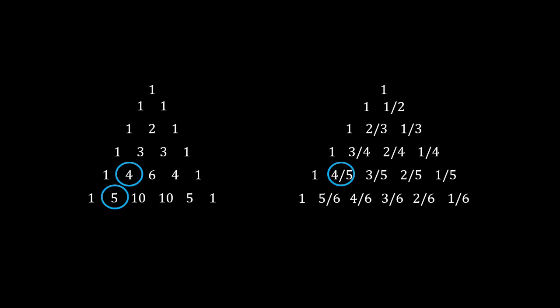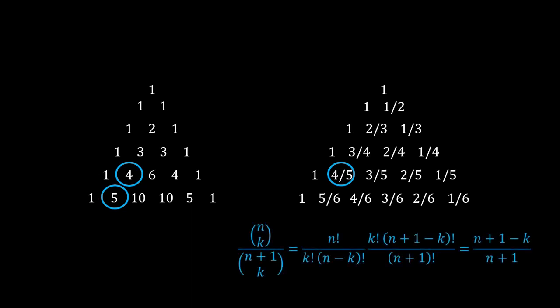Let us work out a formula for the nth row kth term in the second triangle. To do this, we simply use the definition of the term in the Pascal triangle. So we have n choose k divided by n plus 1 choose k. And this gives an expression of n plus 1 minus k over n plus 1 as the formula for the second triangle.